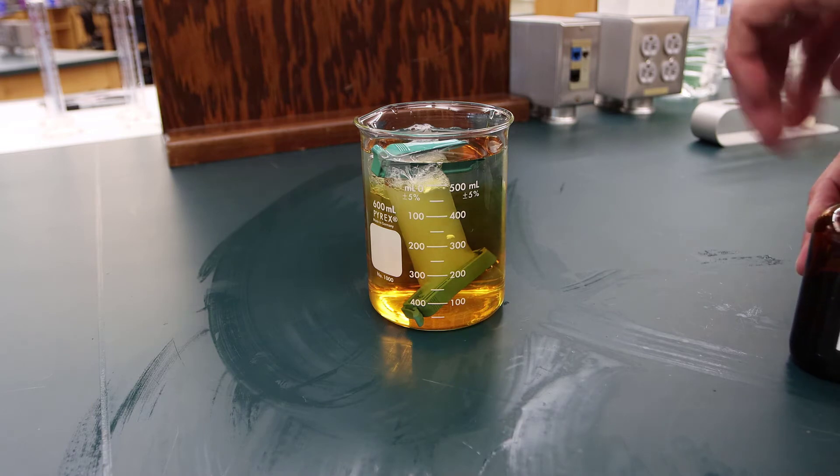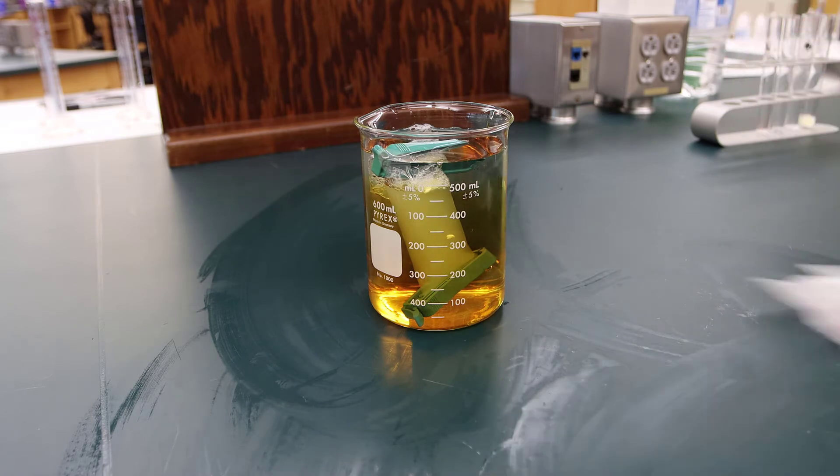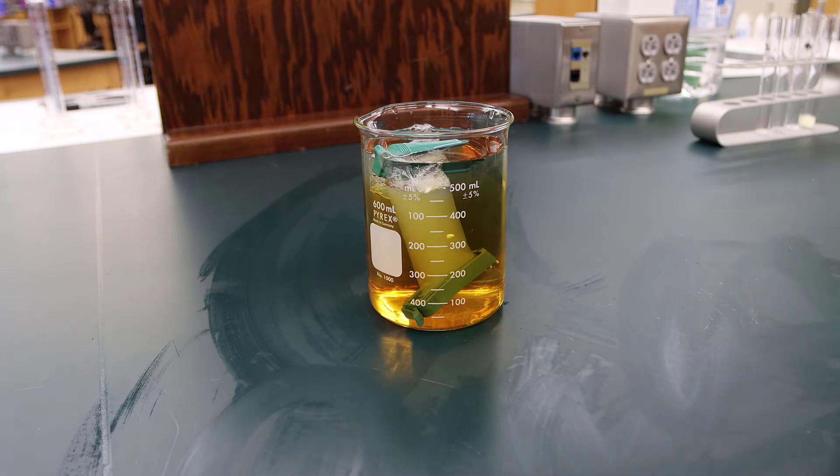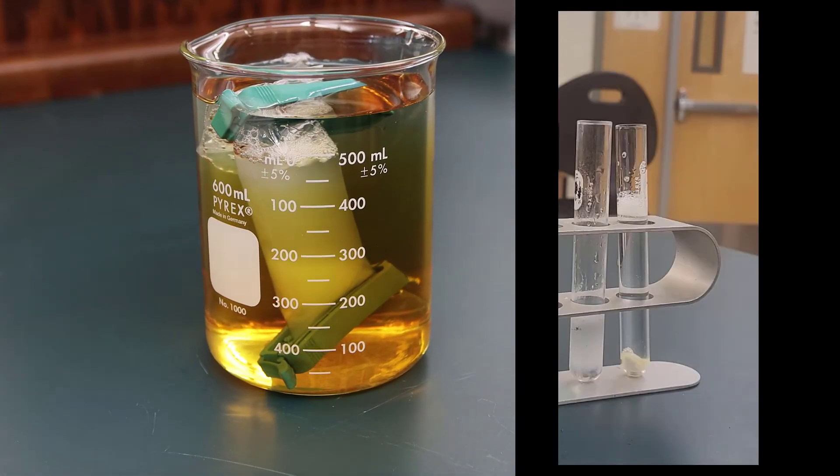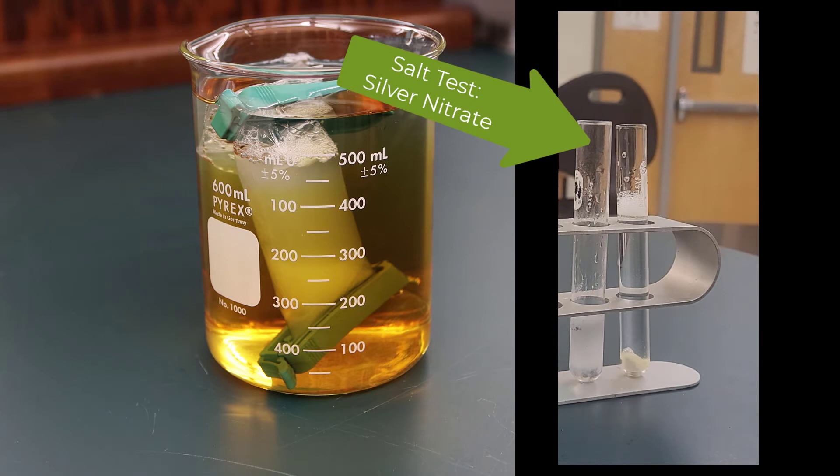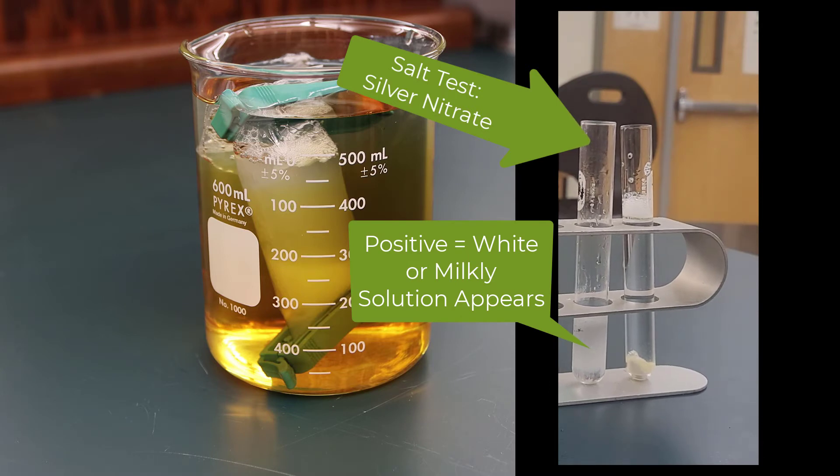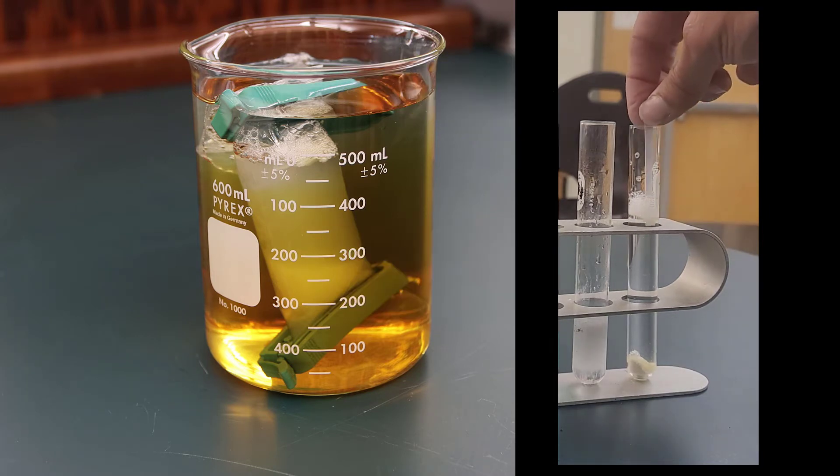While that's doing its thing, let's go over the positive test results for the reagents. There are two here we have not done yet, so let me show you what a positive salt test looks like and what a positive protein test looks like. For salt, we use a chemical called silver nitrate, and when you have silver nitrate it makes this white cloudy color for a positive salt test.